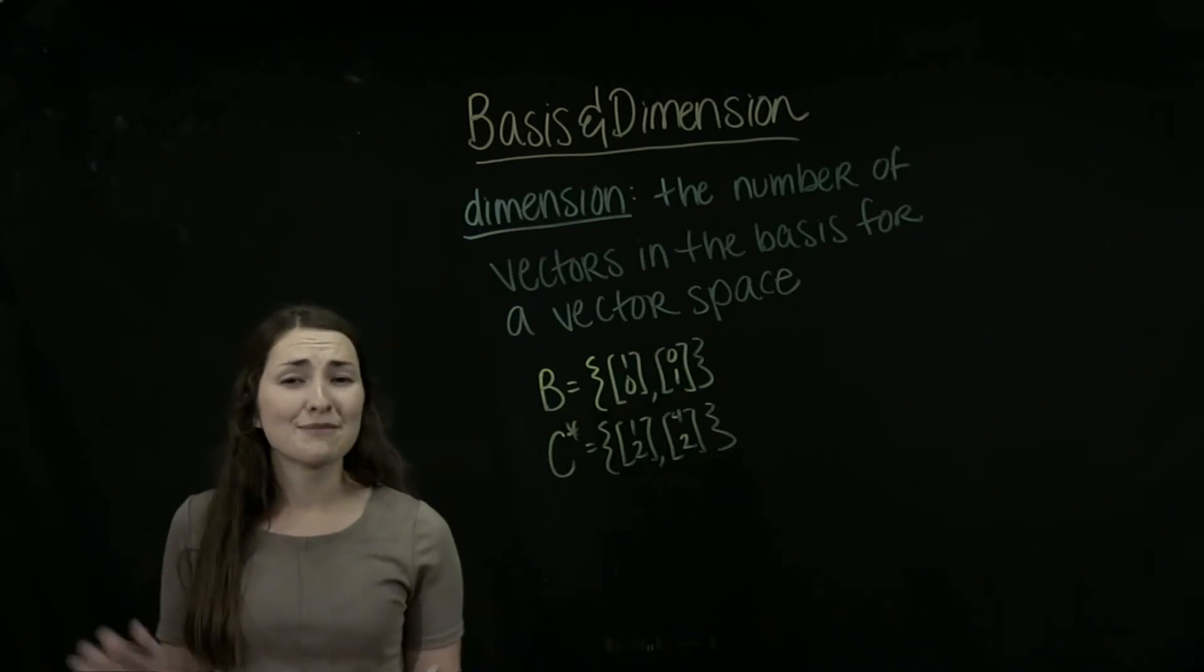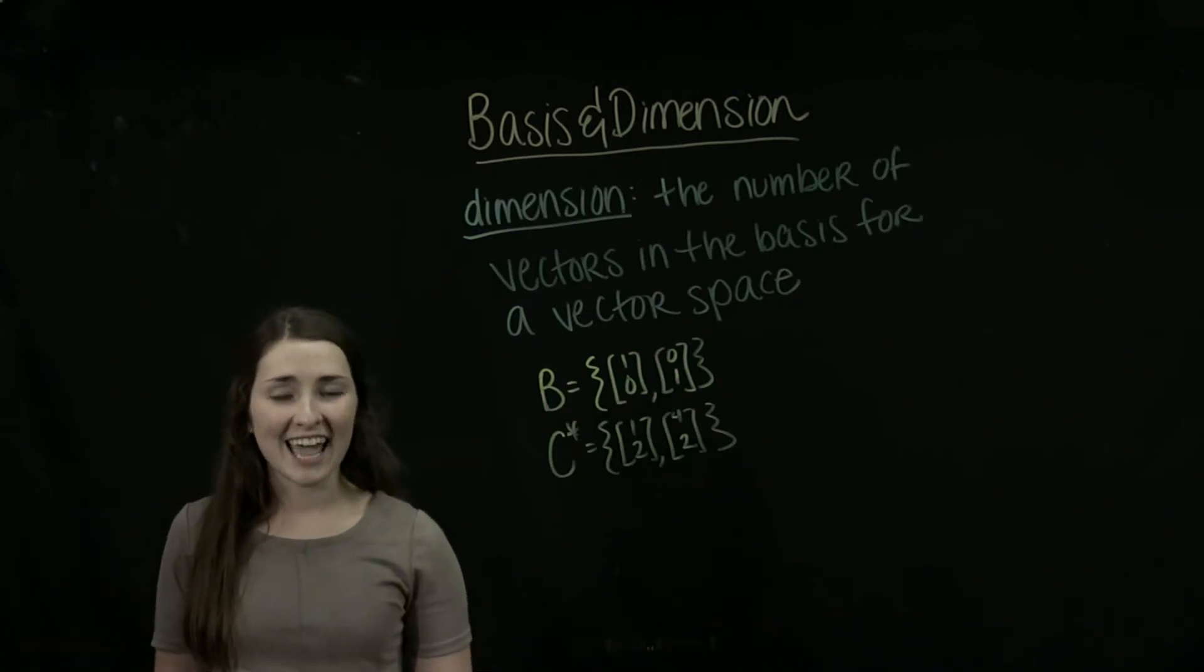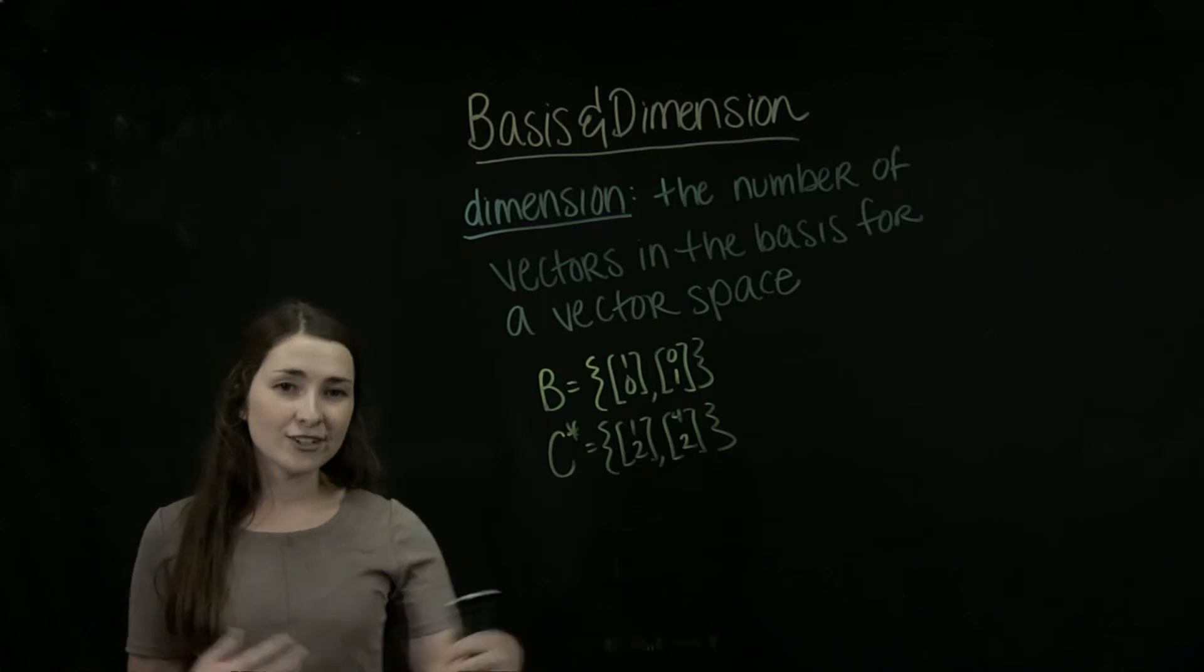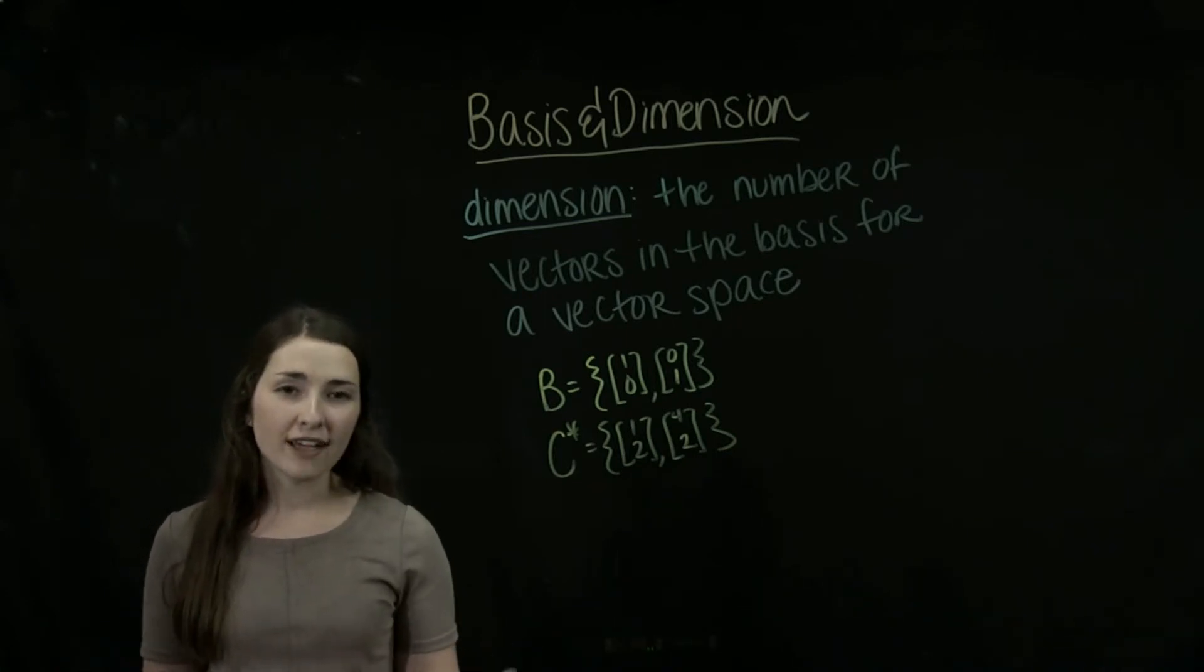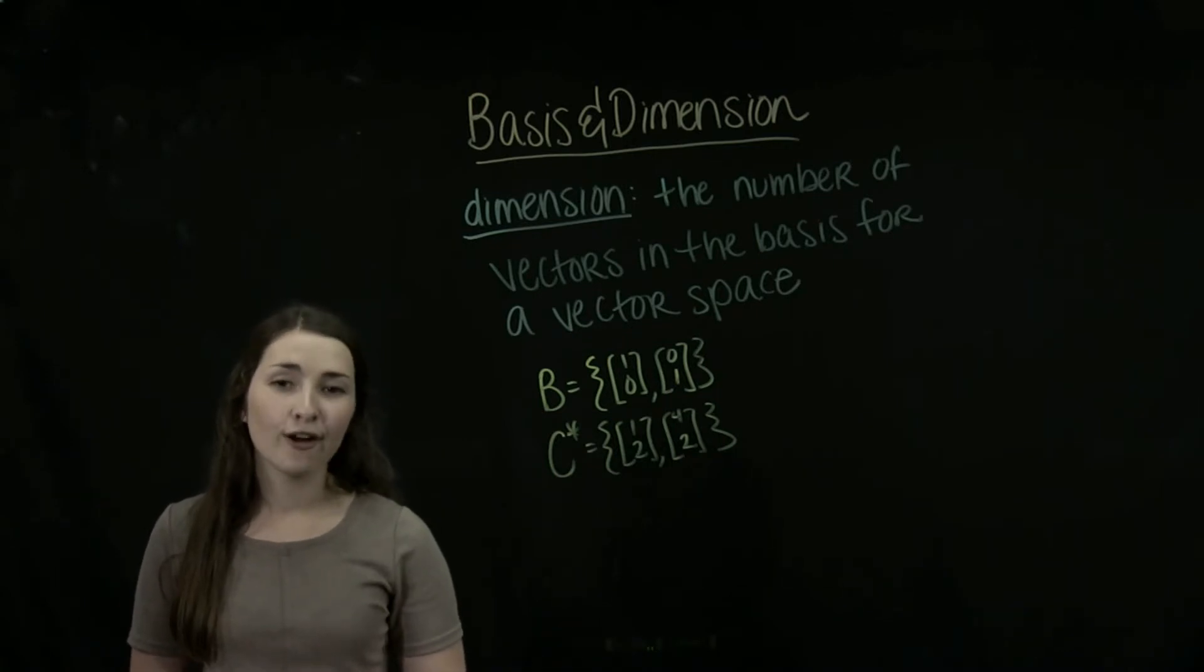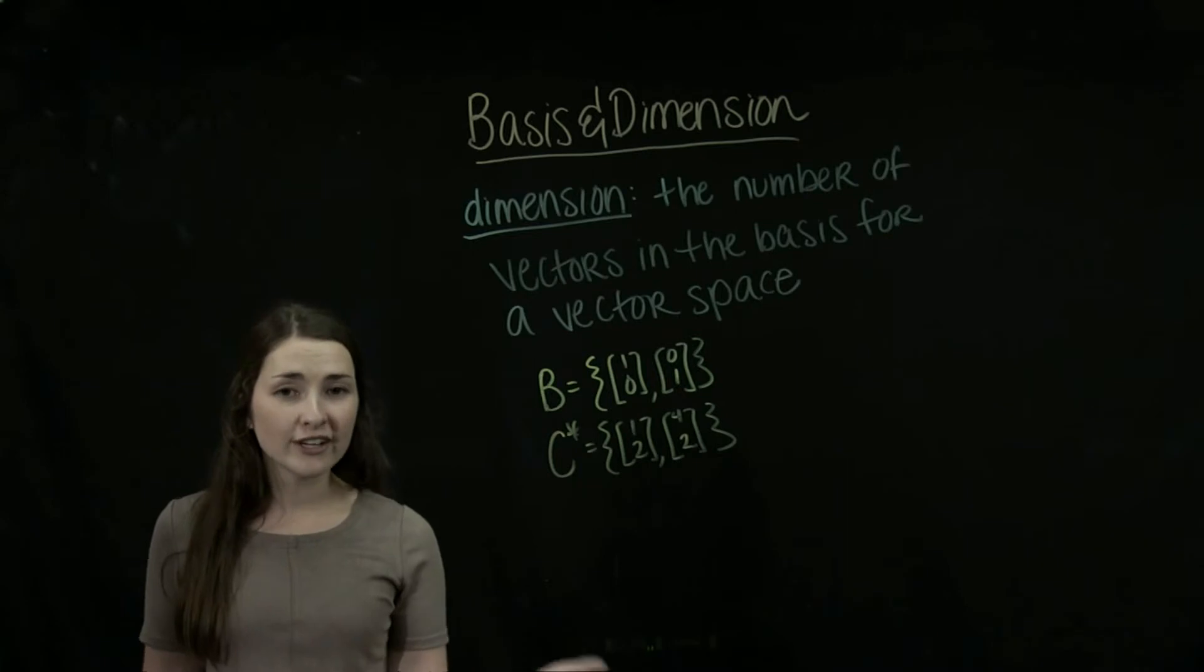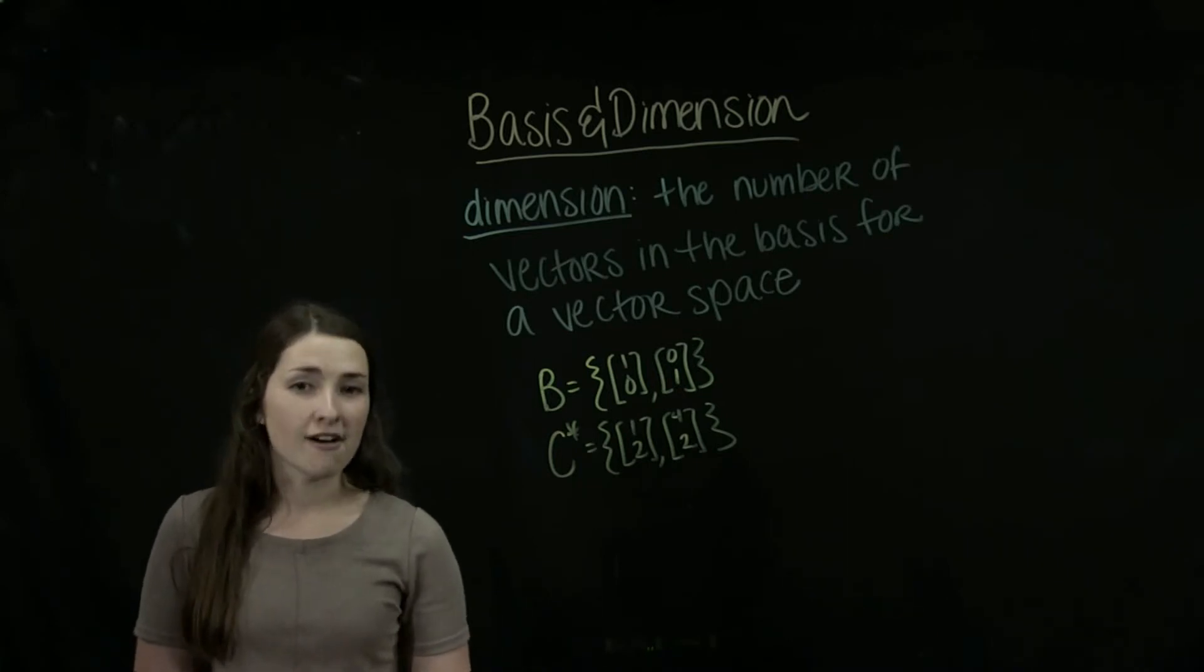So now we're going to be talking about something super important for bases and how we define and characterize different vector spaces and their subspaces. So we can define dimension as the number of vectors in a basis for a vector space or a subspace. We already decided that B and C star are both bases for R2 as they are both linearly independent and span R2.